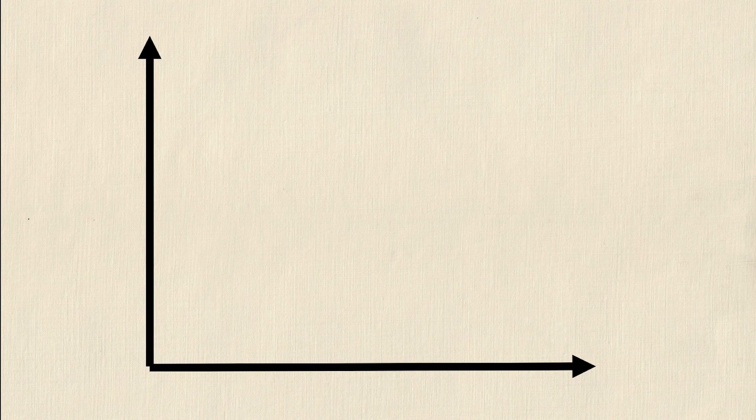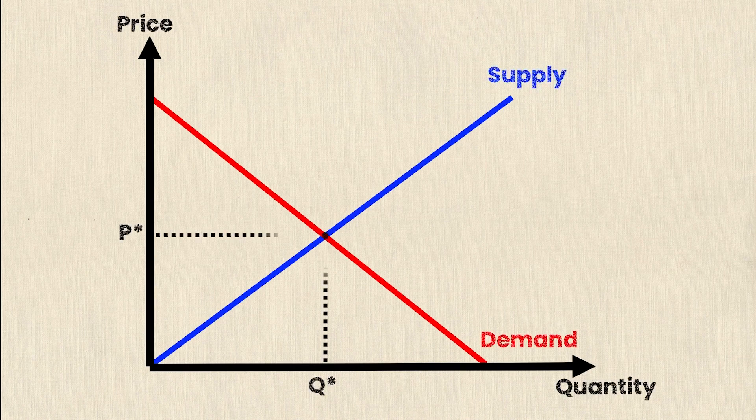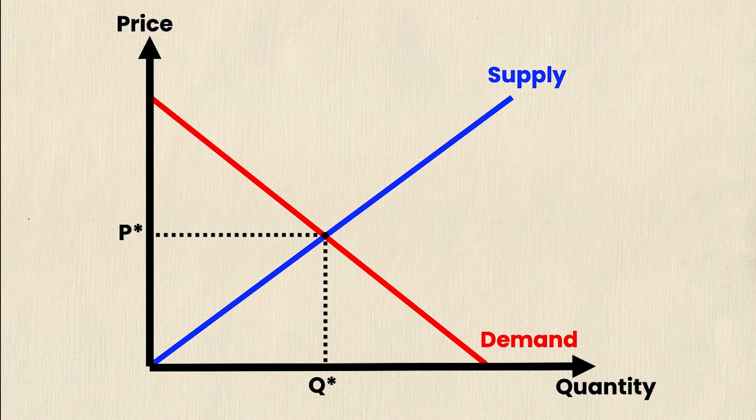So to begin, let's take a look at a general supply and demand graph. We have our axes, our actual curves, and then a fully labeled graph where we have price on the y-axis, quantity on the x-axis, supply is the upward sloping blue line and demand is the downward sloping red line. And of course you can see my equilibrium is labeled P star and Q star.